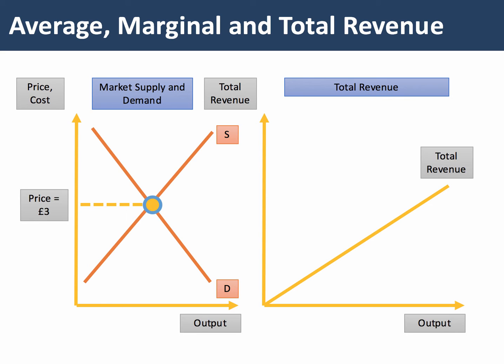Each firm is a price taker — they have no control over the price. So what does the total revenue curve look like? Well, it's just going to be a linear function of price. If the price is £3 and we sell 5 units, the total revenue will be 15.